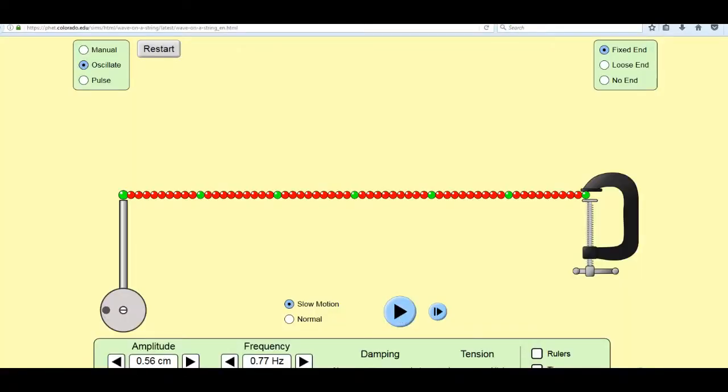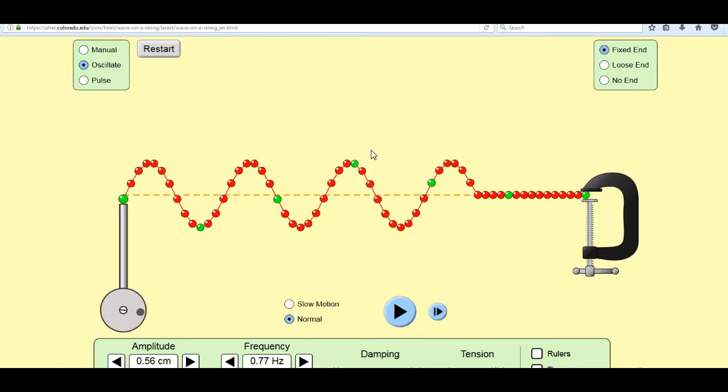But how do standing waves really form? I mean, if I start this thing oscillating, the wave travels across. There's motion of these crests. They move to the right. It's not standing. It's not stationary.